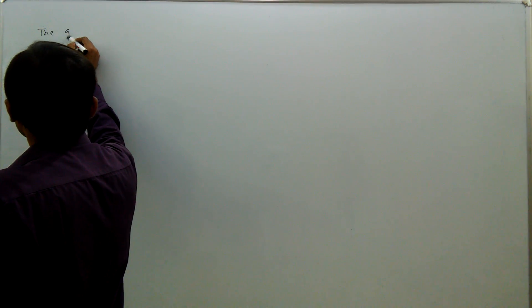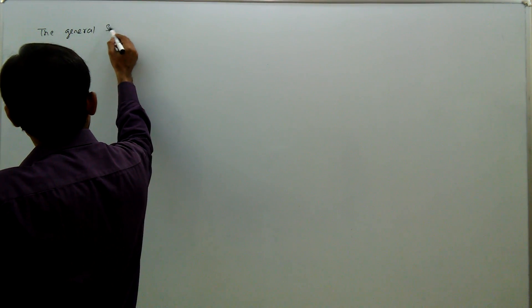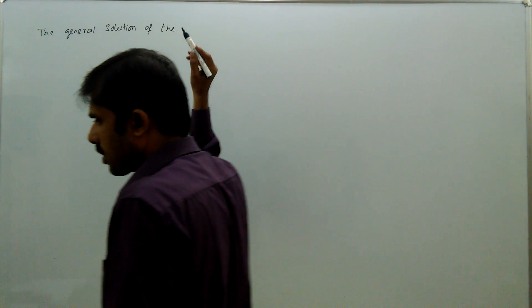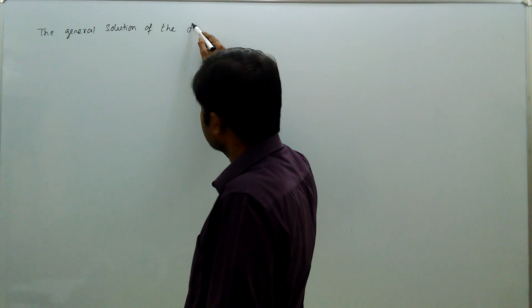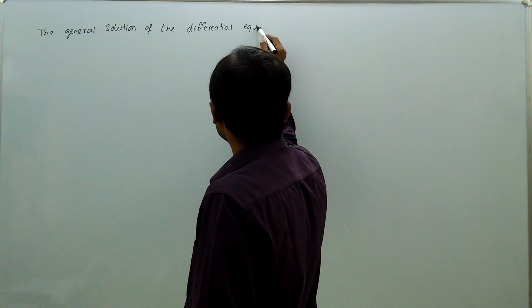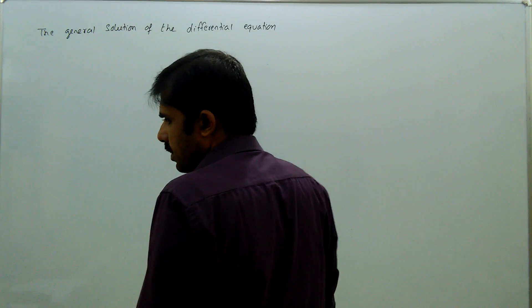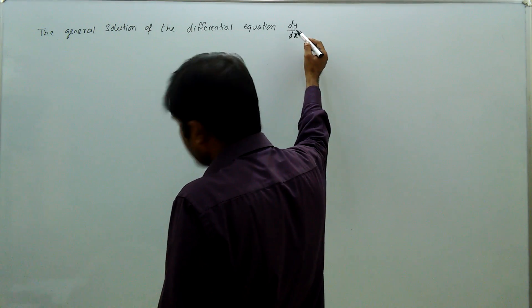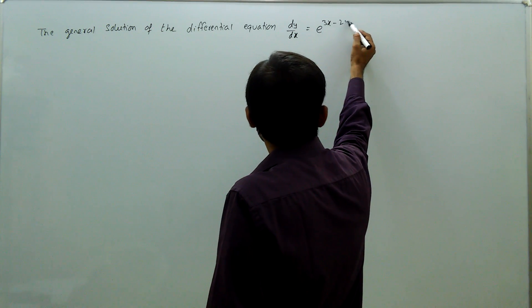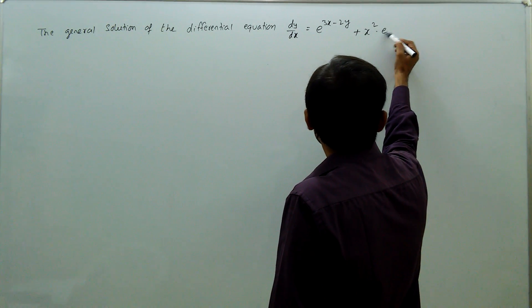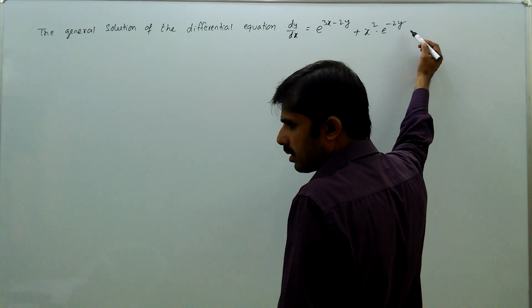The general solution of the differential equation dy/dx = e^(3x - 2y) + x² · e^(-2y) is: